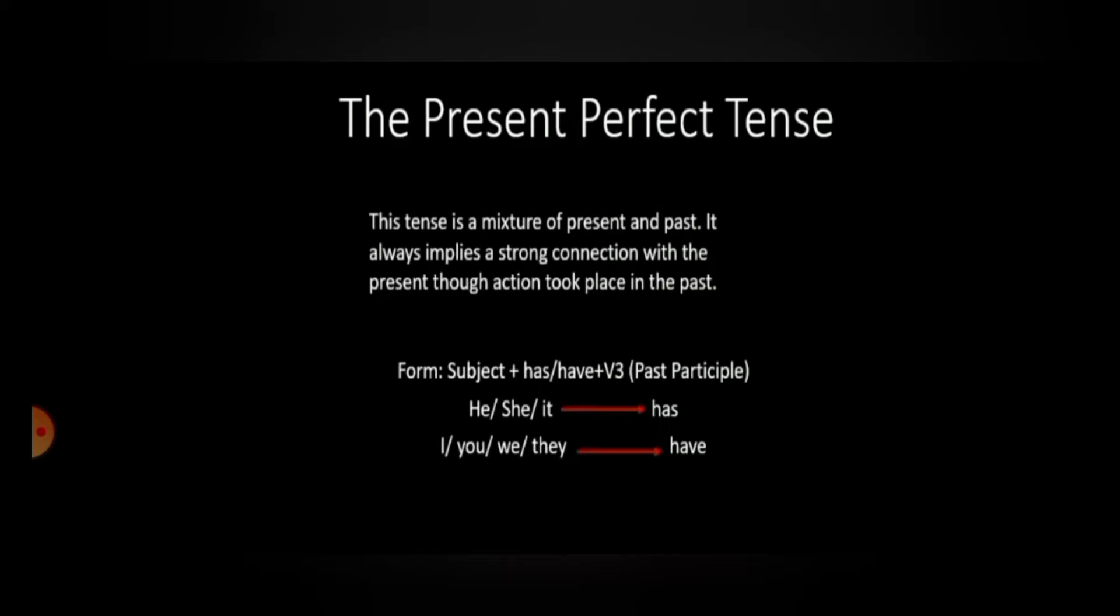Now, we should know that the present perfect verb is formed with have or has plus past participle. What is past participle, children? Past participle is the third form of the verb like sung, rung, hung, played, boarded, etc. Now, the form will be subject plus have or has plus the verb 3. For example,